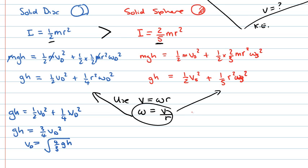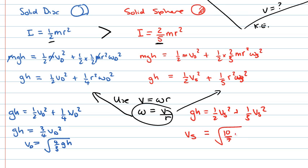Doing the same for the sphere gives the result that the velocity of the sphere is the square root of ten-sevenths times gh. Comparing the two: 10/7 is greater than 4/3, so the linear velocity of the sphere at the bottom of the slope is greater than the linear velocity of the disk.